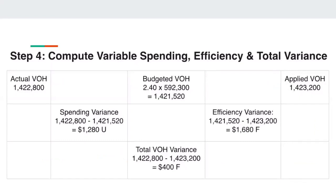Step four is computing variable spending, efficiency, and total variance. Actual variable overhead is given as $1,422,800. The budgeted variable overhead needs to be recalculated: since actual direct labor hours is 592,300, multiply it by the standard variable overhead rate of $2.40 to get the new budgeted variable overhead of $1,421,520. Applied variable overhead is $1,423,200 from the previous step. To find spending variance, subtract actual by budgeted, giving $1,280U — positive, so unfavorable, place a U beside it.